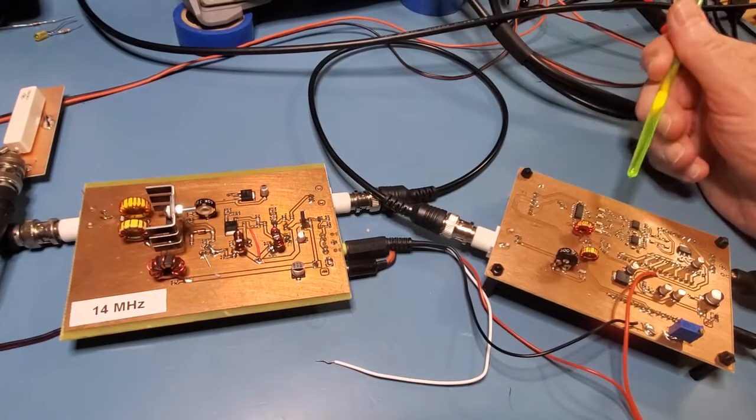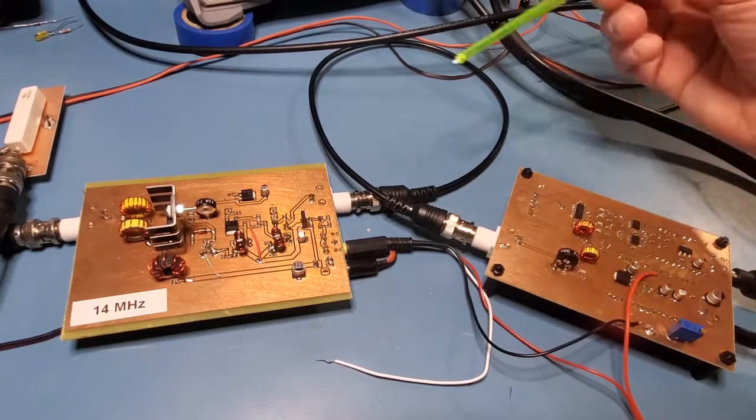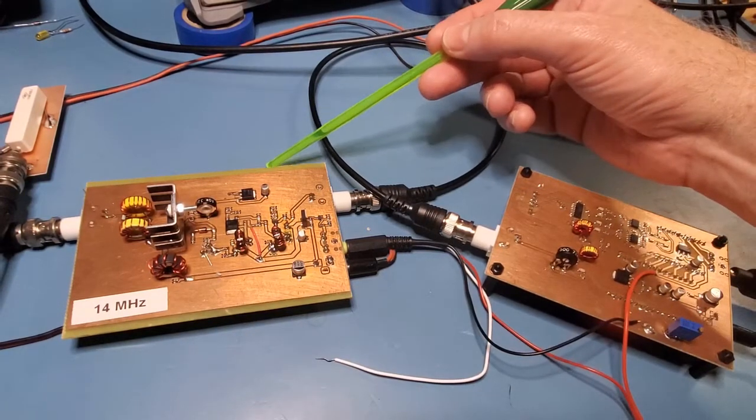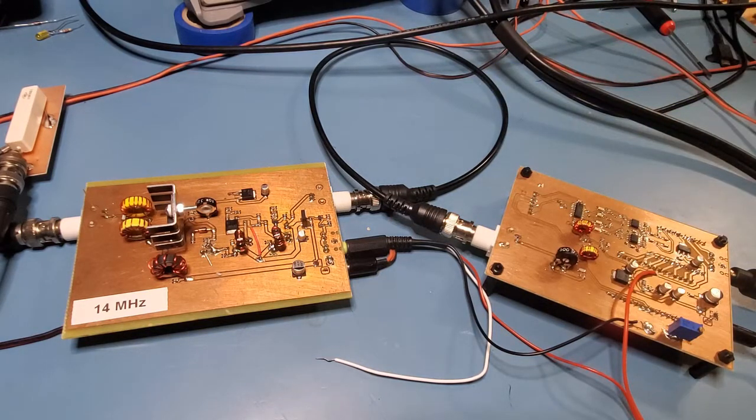In this video, I thought I'd hook up the Taylor modulator that I'd built earlier, linked below, to the amplifier that I'd created earlier, also linked below, and take a look at the output on the oscilloscope and spectrum analyzer to see how the amplifier is performing and what sort of non-linearities it is introducing.